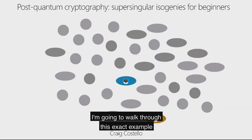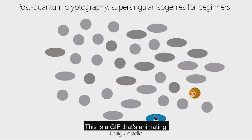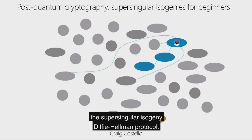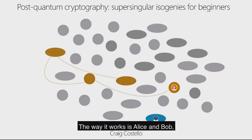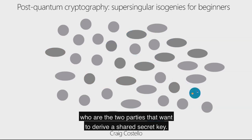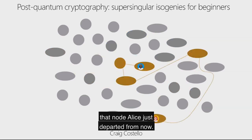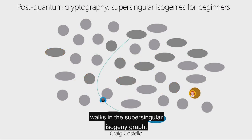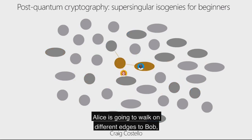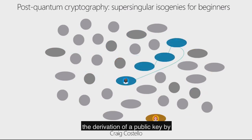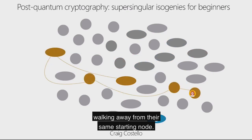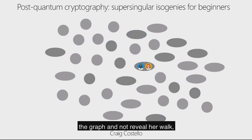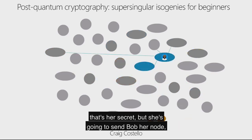I'm going to walk through this exact example on the front slide — a GIF animating a toy example of the supersingular isogeny Diffie-Hellman protocol. The way it works is Alice and Bob, the two parties that want to derive a shared secret key, start on the same node. They're taking walks in the supersingular isogeny graph. Alice is going to walk on different edges to Bob, but she derives her public key by walking away from their same starting node.